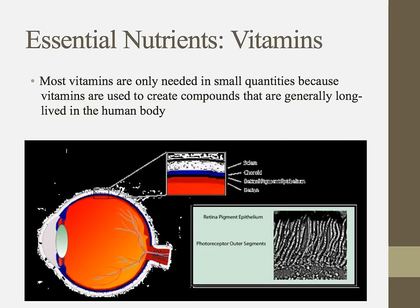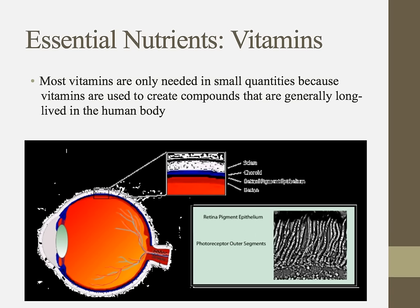Just like minerals, vitamins are only needed in small quantities because the things we use vitamins to make are generally long-lived. For example, the photoreceptor retinal cells in the back of your eyeball are made using vitamin A, but they're there for a long time, so we don't need large doses. In IB, the vitamins you need to know are A, C, and D. Vitamin A connects to our chapter on stem cells and Stargardt's disease — stem cells are used to replace photoreceptor cells in patients who have a problem metabolizing or absorbing vitamin A.